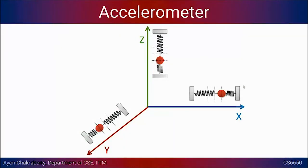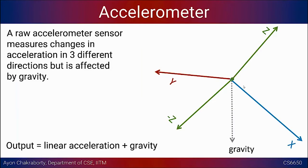You don't just have acceleration in one direction — the force can be directed in 3D space, so you will have components of acceleration along x, y, and z. The underlying equivalent figure has this mass-and-spring system across all axes, extending in both positive and negative directions. The raw accelerometer sensor gives measurements that change in three different directions.